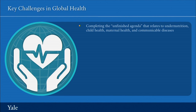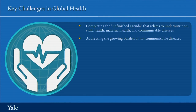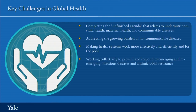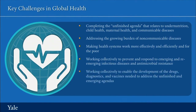The first is completing the unfinished agenda that relates to undernutrition, child health, maternal health, and communicable diseases. The second is addressing the growing burden of non-communicable diseases. The third is making health systems work more efficiently and effectively and better for the poor. The fourth is working collectively to prevent and respond to emerging and re-emerging infectious diseases and antimicrobial resistance. And the fifth is working collectively to enable the development of the drugs, diagnostics, and vaccines needed to address the unfinished and emerging agendas.